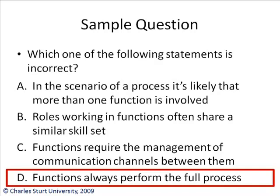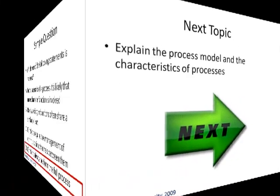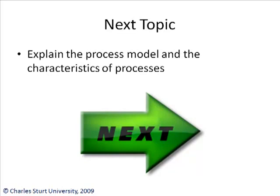For example, think of the car manufacturing process - how many functions work together to manufacture a car? You've got design, logistics, sales, manufacturing - all these business units have to come together to manufacture cars. That's typically how processes work. So what's next? The next topic will cover the process model, also known as the high-level process model, and the characteristics of processes. Live long and prosper, and see you back next time. Cheerio.